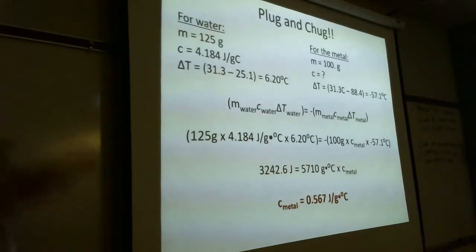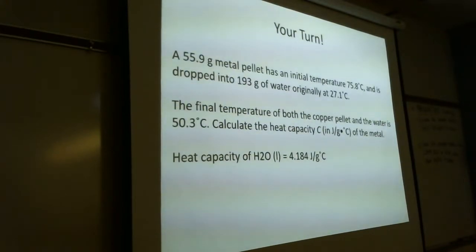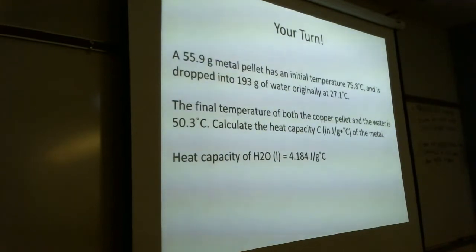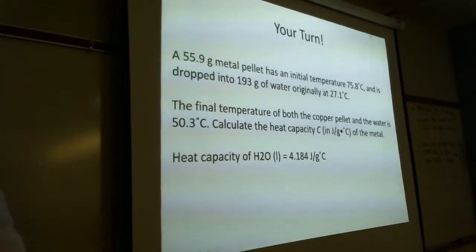This is what you're doing in lab — you're making your own experiment, so you need to define masses, temperatures, quantities — the whole works. You try this one: a 55.9-gram metal pellet has an initial temperature of 75.8°C. It's dropped into 193 grams of water, originally at 27.1°C. The final temperature of both the copper pellet and the water is 50.3°C. What's the heat capacity of the metal? Heat capacity of liquid water is provided there for you.